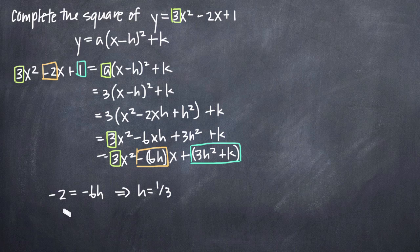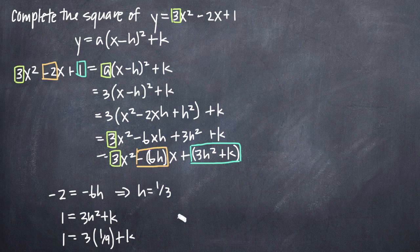Then, we can set 1 from the left hand side equal to 3h squared plus k. Plugging in the value we got for h, we'll get 1 equals 3 times 1 ninth when we square 1 third plus k. And when we simplify, we'll get 1 equal to 1 third plus k.